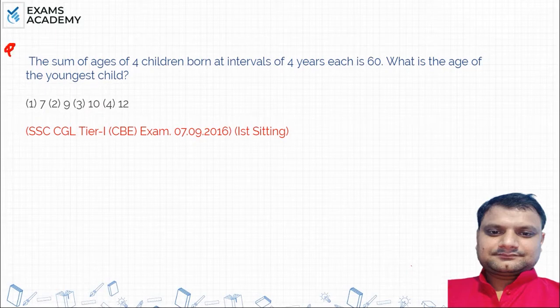Okay guys, let's see what's going on in the question. The sum of ages of 4 children born at interval of 4 years each is 60.